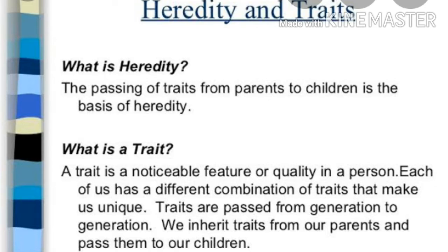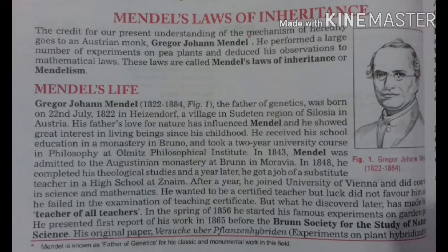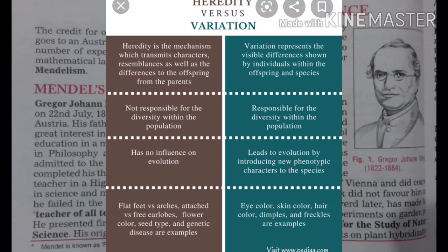Variation means changes, and there are mainly two types: hereditary and environmental. Hereditary variation refers to differences in inherited traits. Variations are found in progenies of the same or different parents. The traits present in parents can re-assort and give rise to different combinations, which are responsible for hereditary variation within the same progeny. Identical twins, however, are an exception.